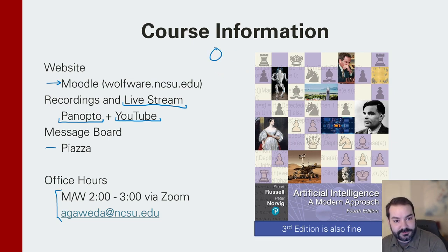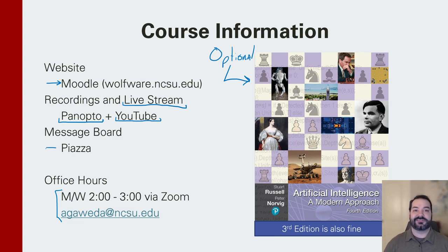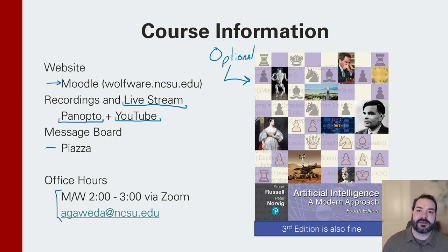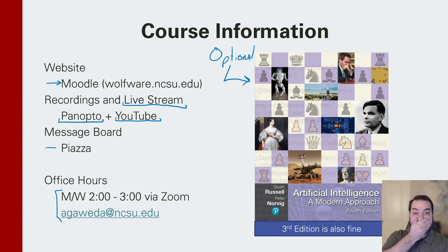We are going to have an optional textbook. We're working off of Artificial Intelligence: A Modern Approach by Stuart Russell and Peter Norvig. It's optional if you choose to purchase it — the fourth edition is fine, third edition is fine, international edition is fine. The big thing is I'm not giving you assignments straight out of the textbook. The algorithms haven't changed — something like a neural network was invented in the 1960s — but it's still good to have as a point of reference.